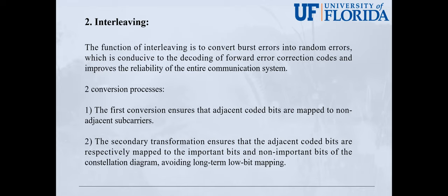Let's talk about interleaving. The function of interleaving is to convert burst errors into random errors, which is conducive to the decoding of forward error correction codes and improves the reliability of the entire communication system. Interleaving consists of two conversion processes. The first ensures adjacent coded bits are mapped to non-adjacent subcarriers. The second ensures adjacent coded bits are respectively mapped to the important bits and non-important bits of the constellation diagram, avoiding long-term low-bit mapping.